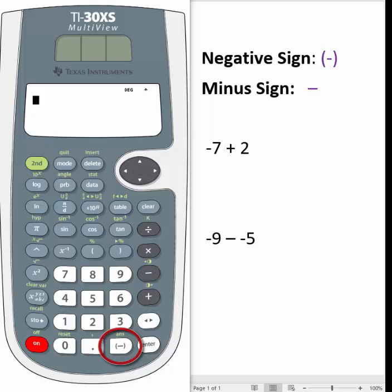The negative sign looks like a dash inside parentheses and is located to the left side of the enter key. The minus sign is located in the column of operations where you see division, multiplication, subtraction, and addition.